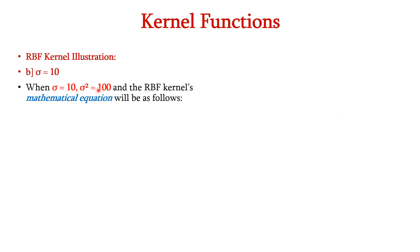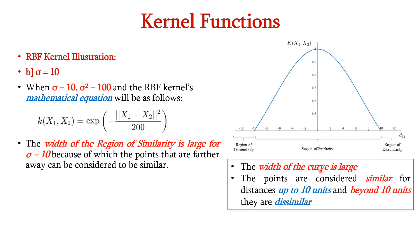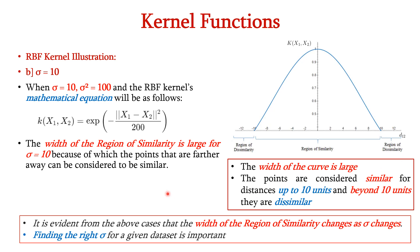Next, consider sigma equal to 10. When sigma is 10, sigma square becomes 100 and the denominator in the kernel equation is 2 into 100 equals 200. The width of the region of similarity is large for sigma equal to 10, so points farther away are also considered similar — up to distances of about 10 units. Beyond 10 units, we observe the region of dissimilarity. Thus, it is evident that the width of the region of similarity changes as the sigma value changes, so we must find the right sigma value for a given dataset to obtain the optimal curve.